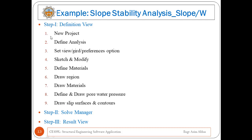The following procedure will be used to solve the example in the Slope W feature of GeoStudio. In the definition view: first define a new project, then define analysis, set views, grid or preferences and units, sketch axis lines or any other required elements, modify any line or axis if required, define materials, draw regions, draw materials, define and draw pore water pressure, then draw slip surfaces and contours. In step two the problem will be solved, and step three is the result view where different results will be displayed.